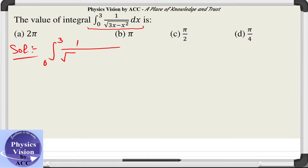So this is another form of the given integral which can be written as 0 to 3, x raised to the power minus half and 3 minus x raised to the power minus half dx.